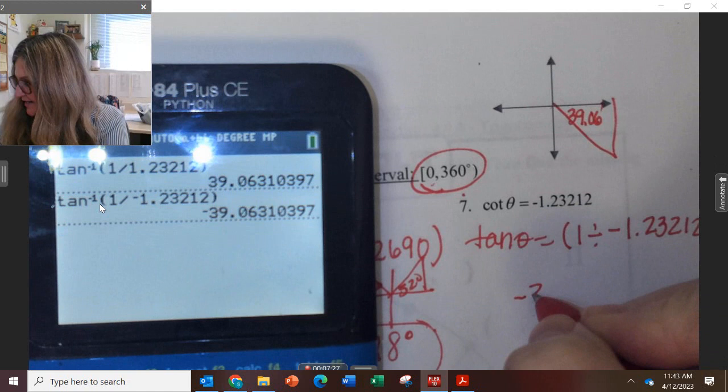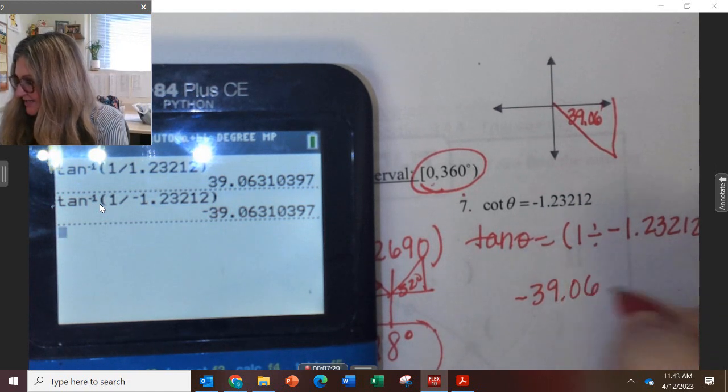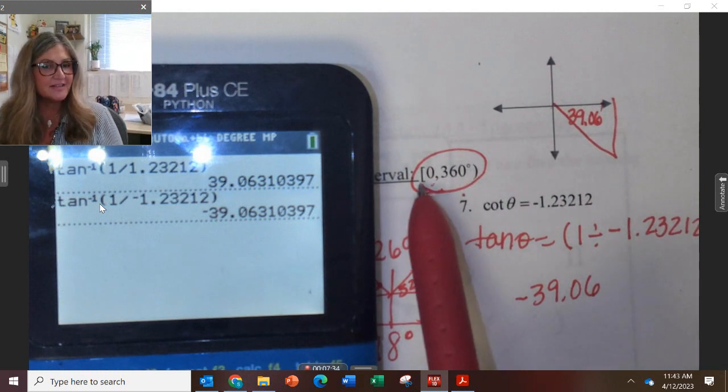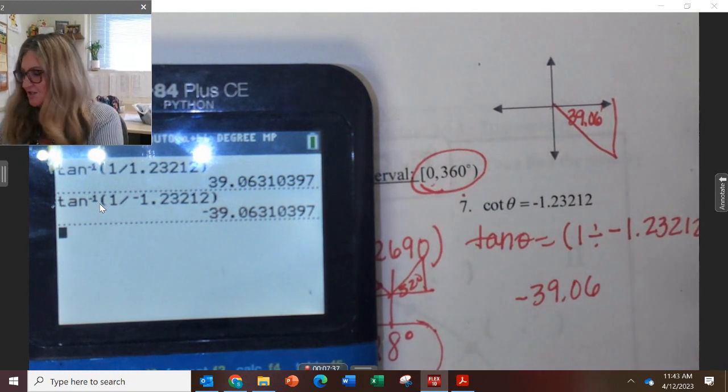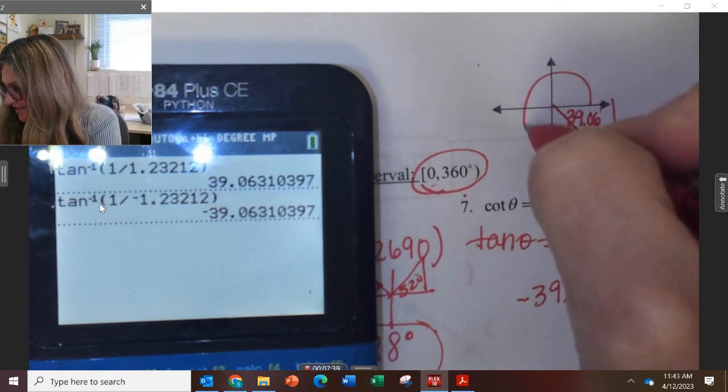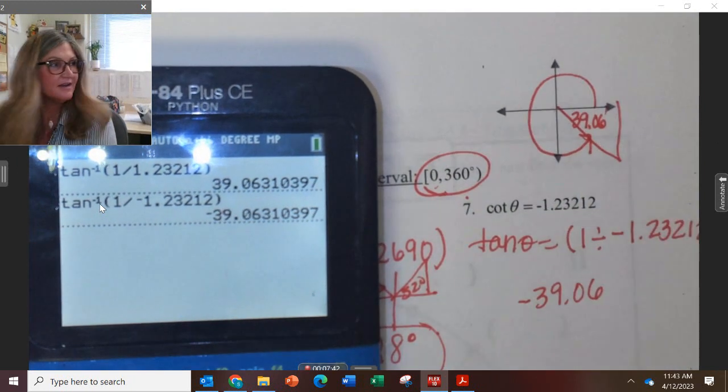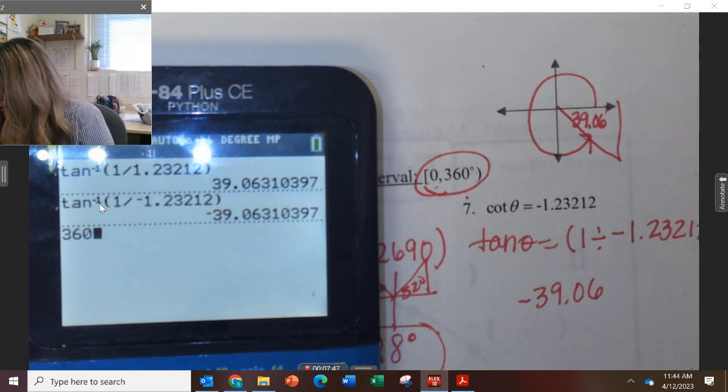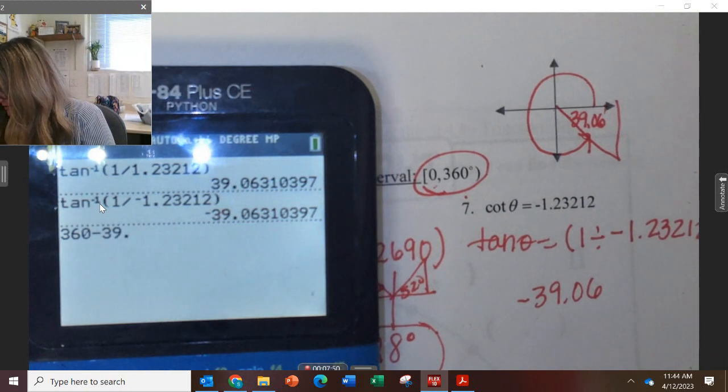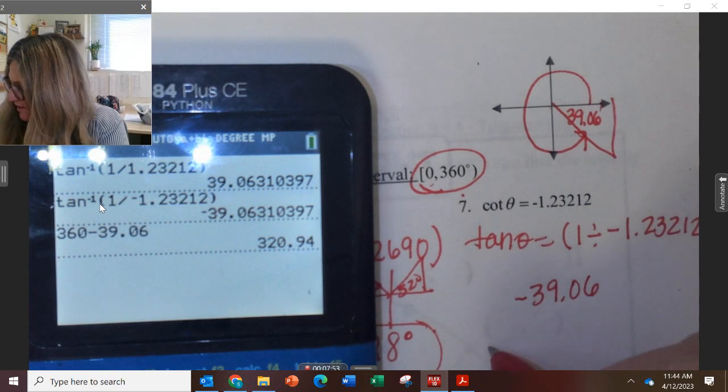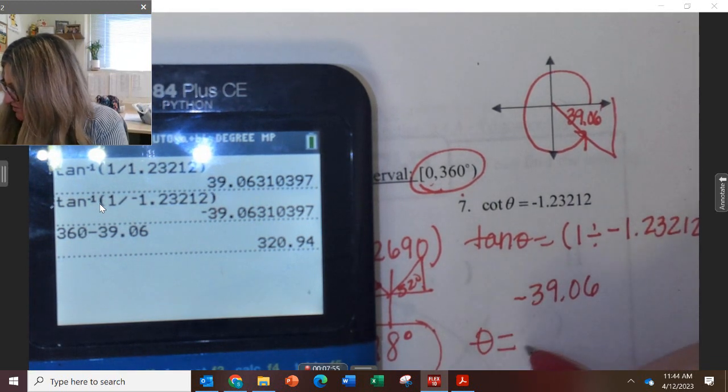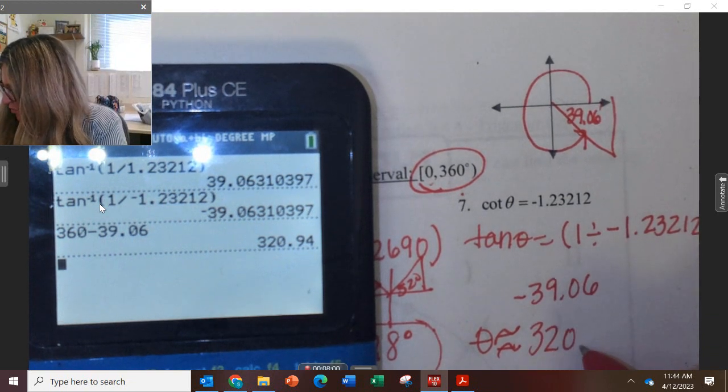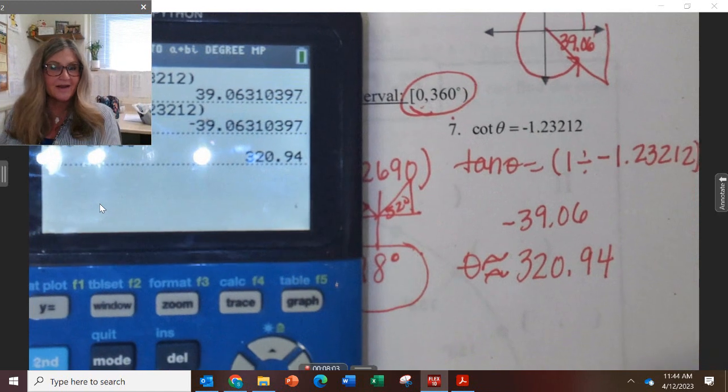If you said the answer is negative 39.06, you wouldn't get anything right. That's not right. First of all, the answer is not in between 0 and 360. So how can I make it correct? By going in this direction instead. So I'm going to do 360 minus 39.06. So one of my answers for my angles is 320.94. That is one correct answer.